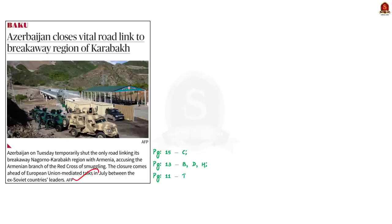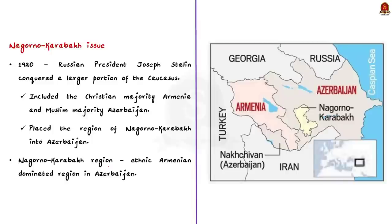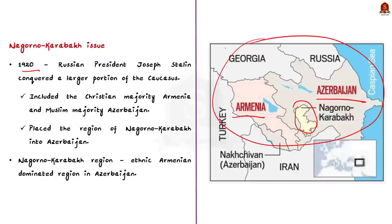Azerbaijan has closed the only road connecting Nagorno-Karabakh with Armenia, believing the Armenian branch of the Red Cross is involved in smuggling. In this context, let us learn about the Nagorno-Karabakh issue. This is a long-standing conflict between Armenia and Azerbaijan. In 1920, Joseph Stalin conquered the Caucasus region, which included Christian-majority Armenia and Muslim-majority Azerbaijan. Both joined the Soviet Union, and Stalin placed the Nagorno-Karabakh region — an ethnic Armenian-dominated area — within Azerbaijan's boundaries. This is where the conflict began.